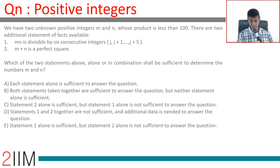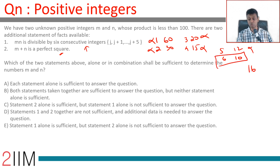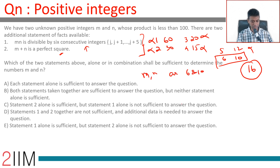Now let's put both statements together. Statement 1 tells us m×n = 60, and statement 2 tells us m+n is a perfect square. Checking all factor pairs of 60: 1+60=61 (not a perfect square); 2+30=32 (no); 3+20=23 (no); 4+15=19 (no); 5+12=17 (no); 6+10=16 — this works! So the only possibility is m=6, n=10. Both statements together are sufficient to answer the question, but neither statement alone is sufficient.